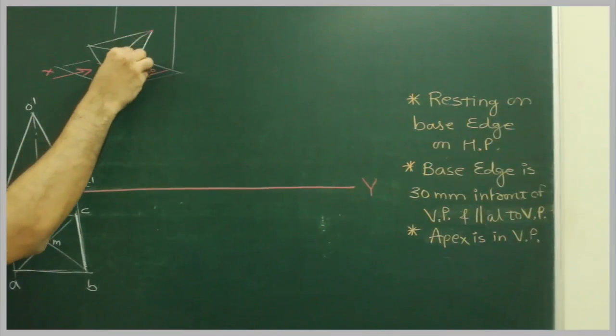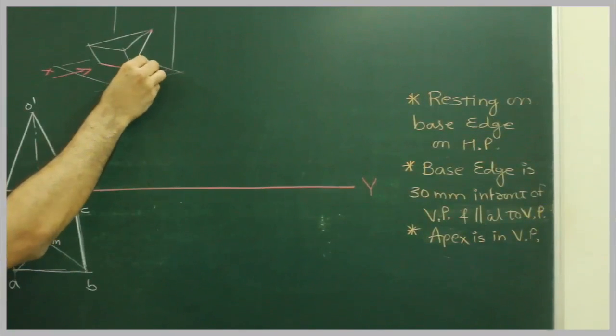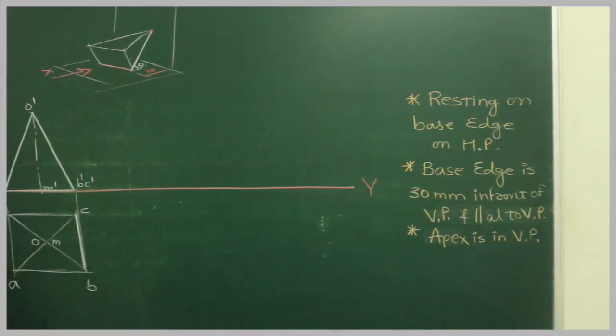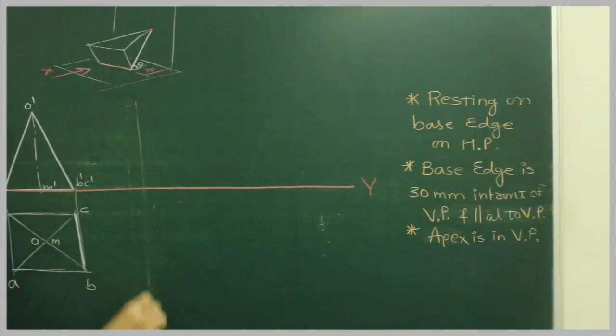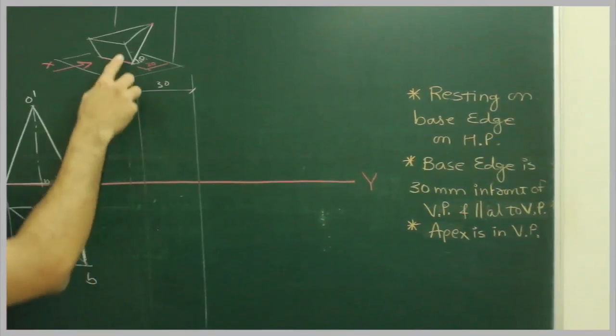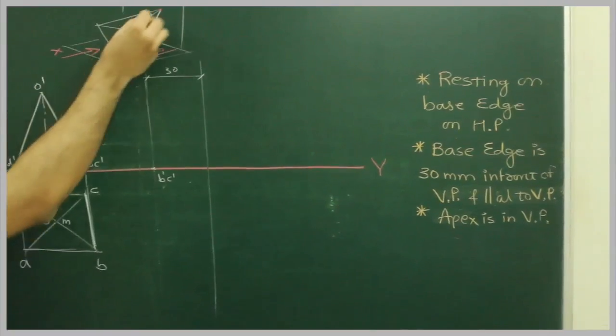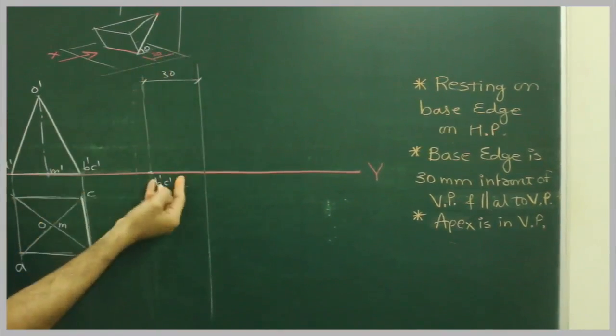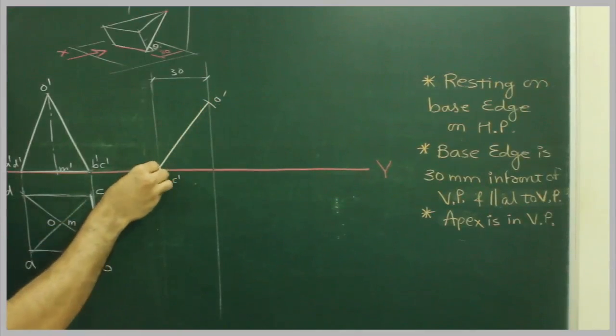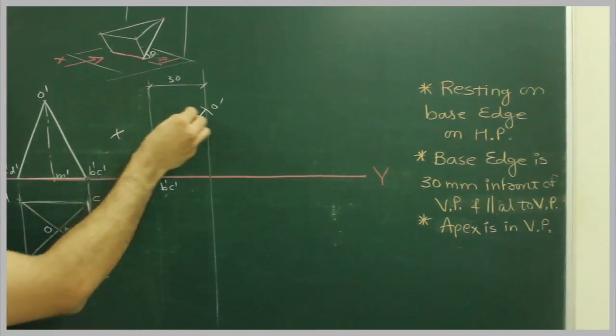So what we need to do? We need to find out this inclination. To find out this inclination theta, what we will do? First we will draw 30 mm in VP. This is 30. Because this edge is over here, that is B dash C dash. And O dash is over here. This distance is 30. So I am going to take B dash C dash to O dash and cut over here. Then I will take B dash C dash to A dash and from here cut it out.